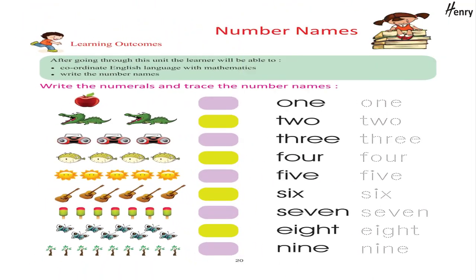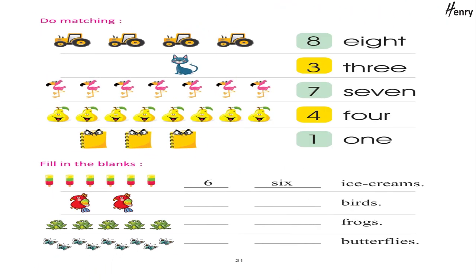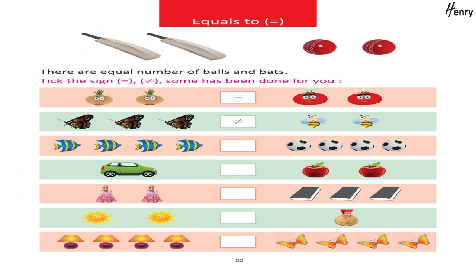Number Names — Learning Outcomes: After going through this unit, the learner will be able to coordinate English language with mathematics, write the number names, write the numerals and trace the number names. Matching activity: fill in the blanks — equals 2. There are an equal number of balls and bats. Take the sign; one sum has been done for you.